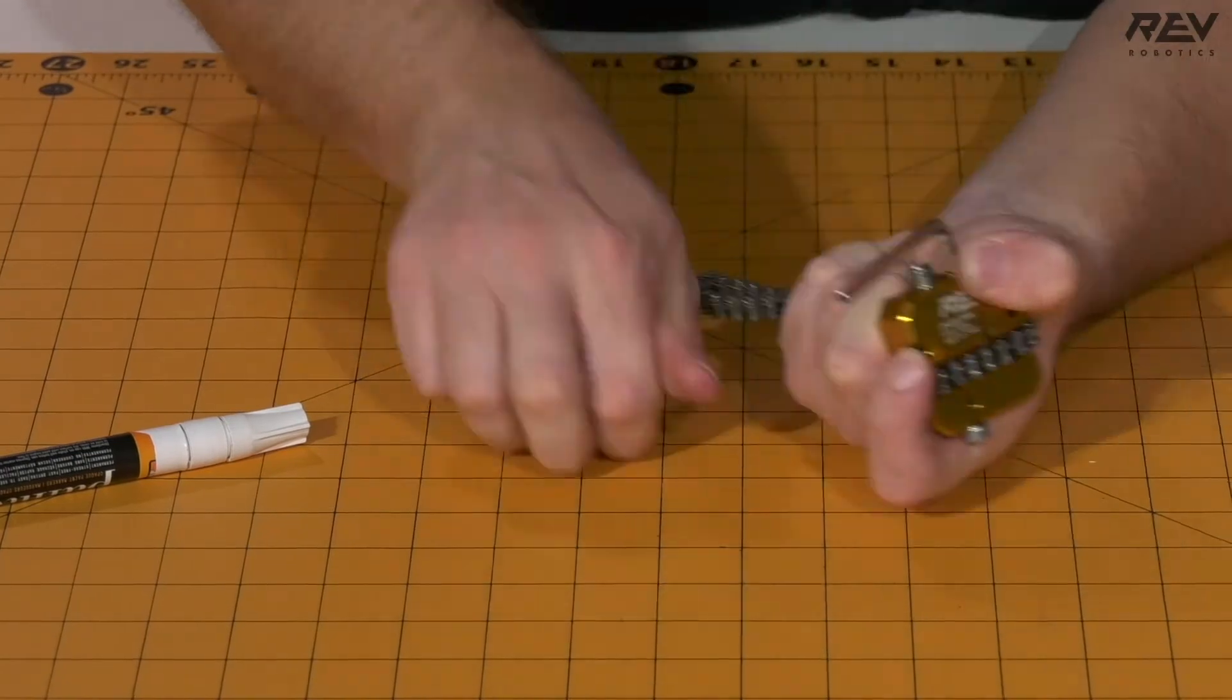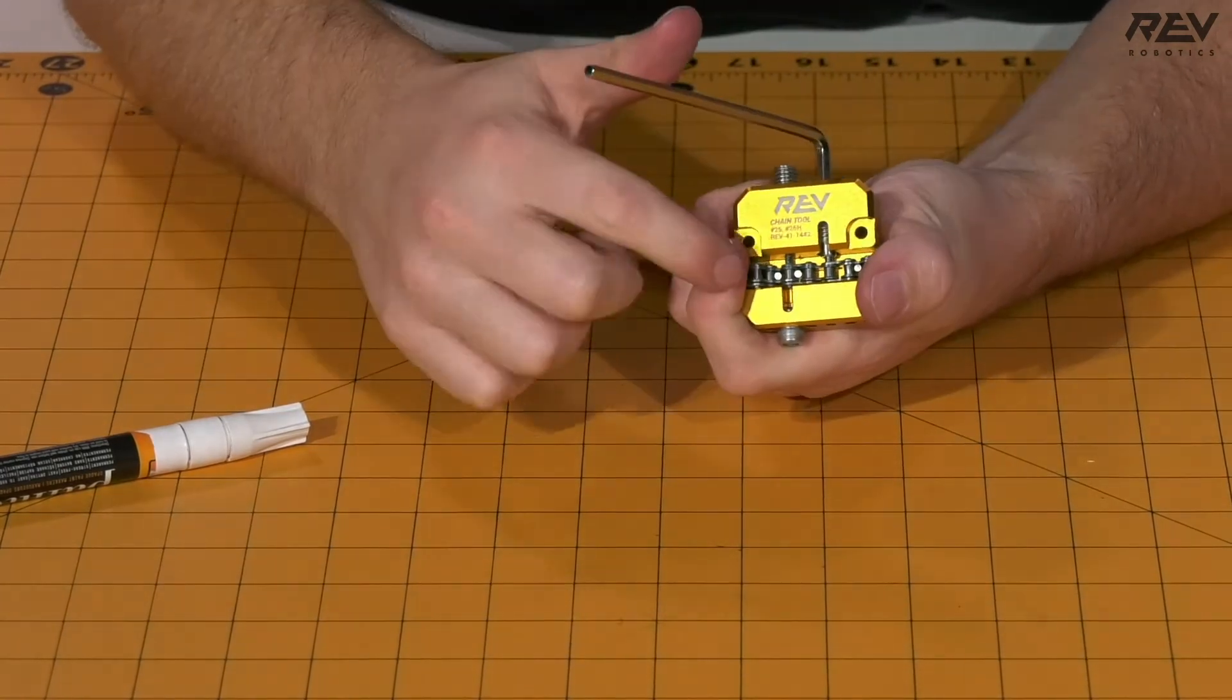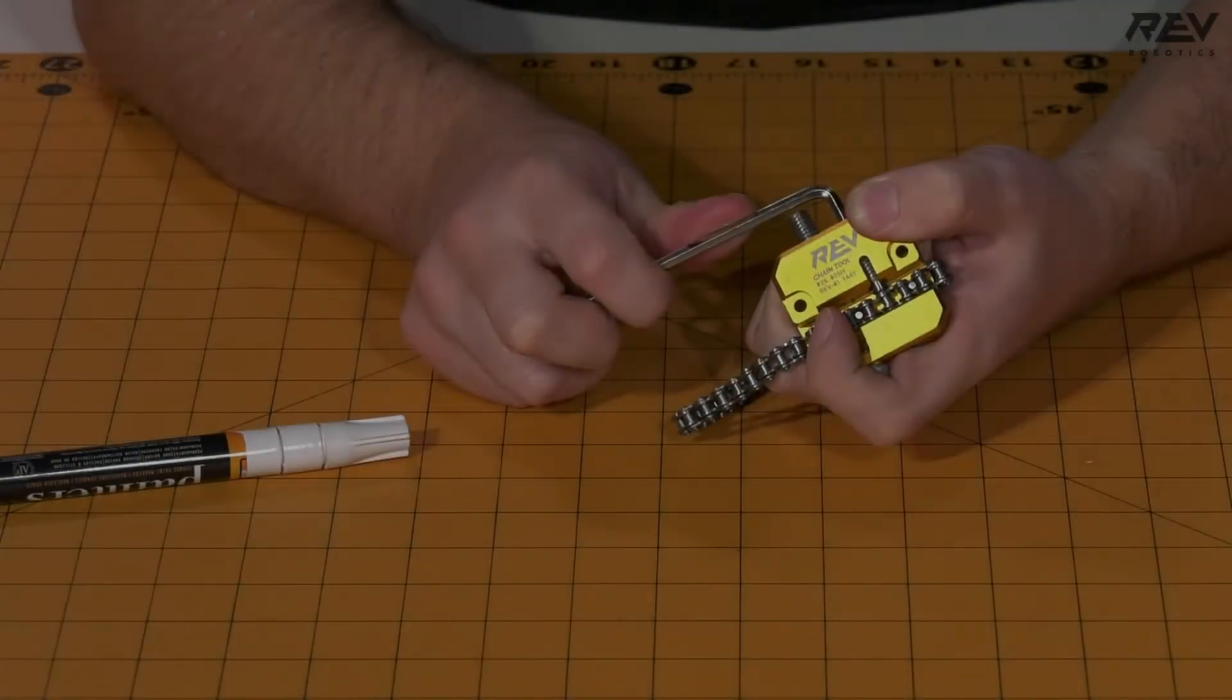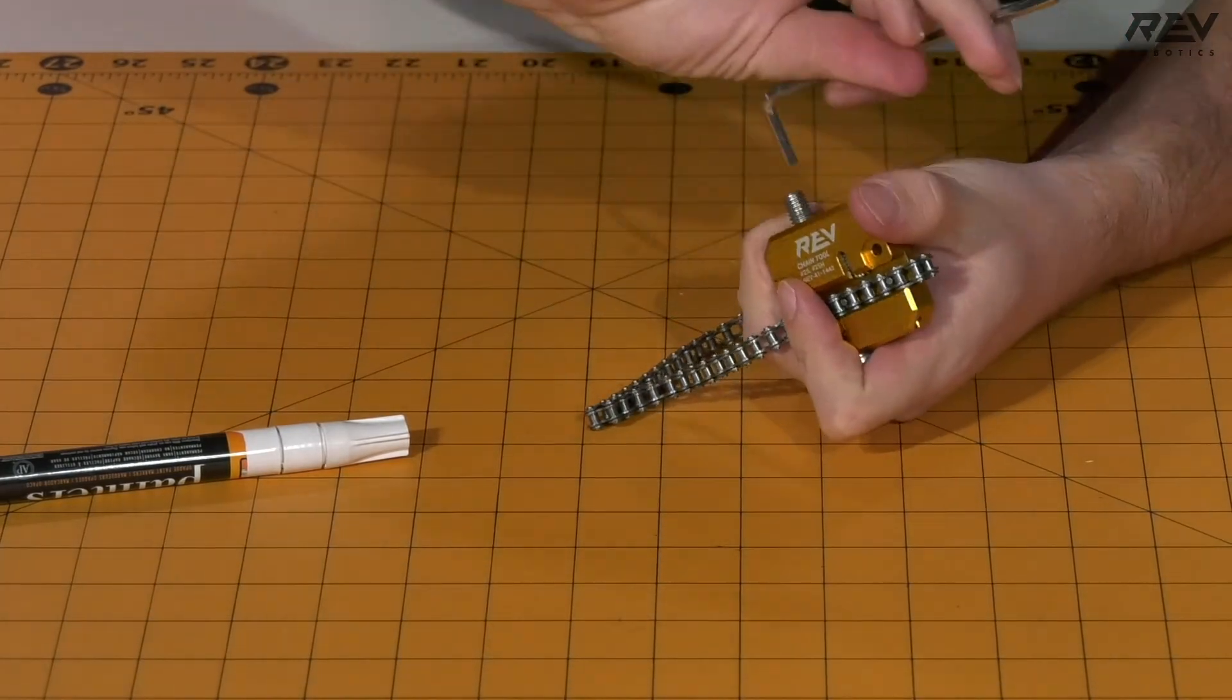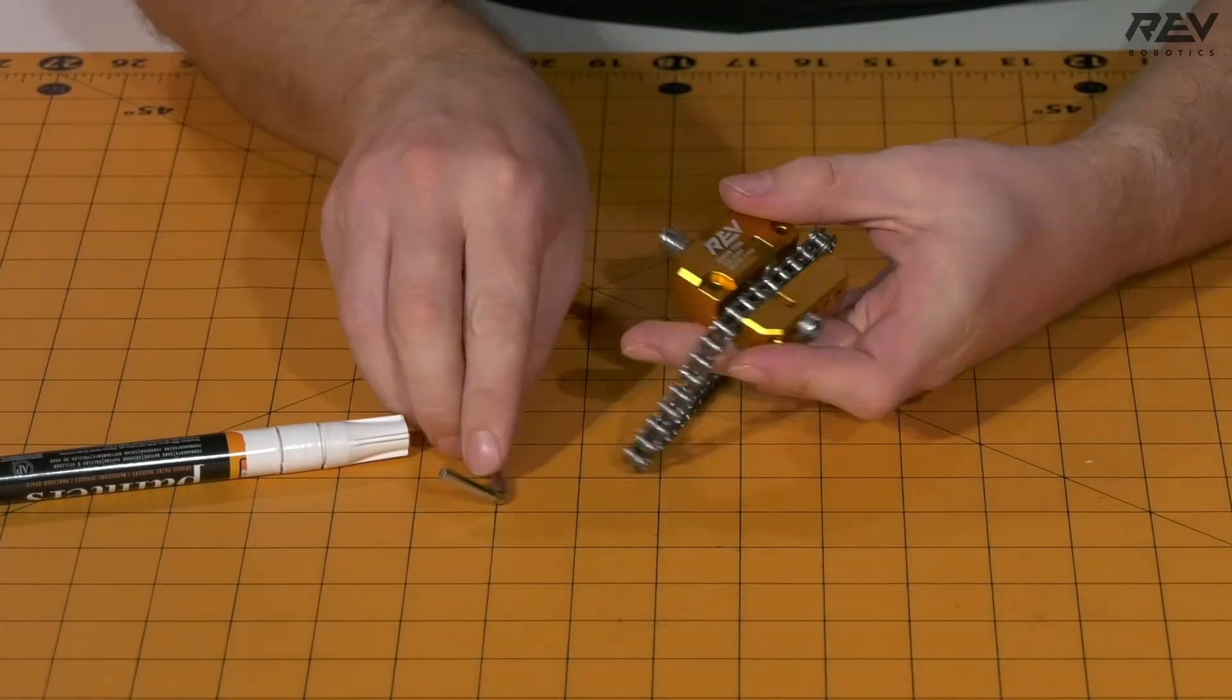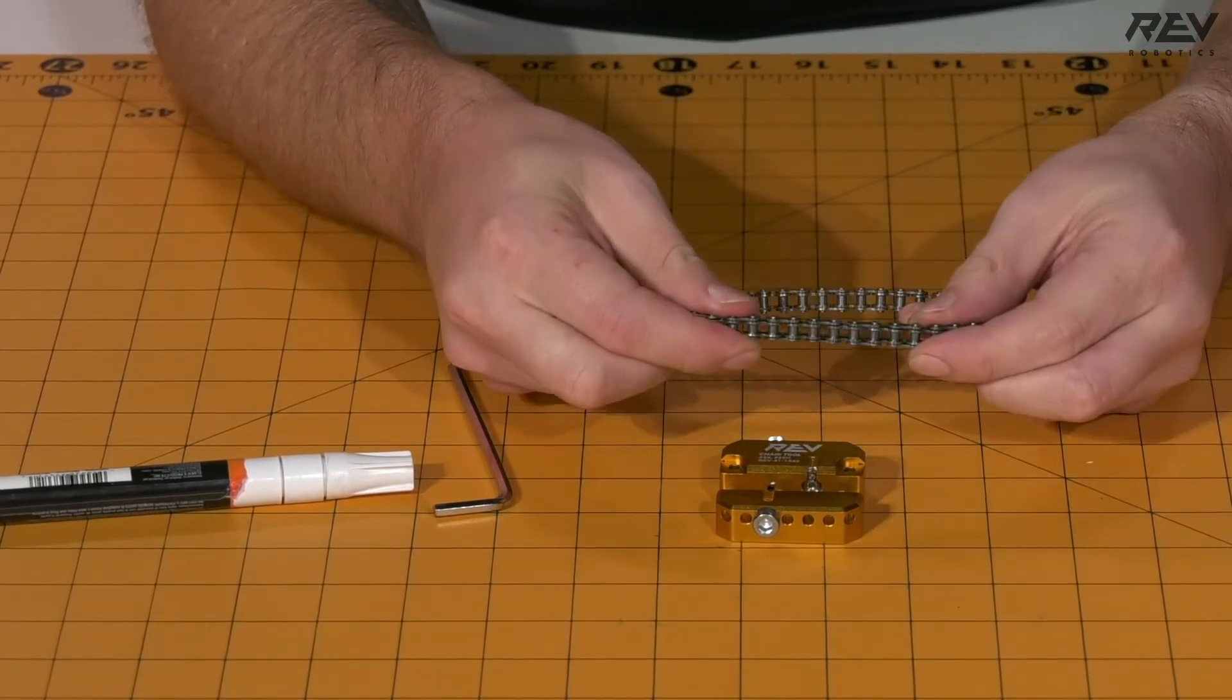Unlike pushing the pin out, pushing the pin in, you don't need to be nearly as careful or worried because it's going to bottom out against the bottom of the tool here. You can just keep cranking on this until it feels really tight. Now that the pin is completely reseated, we can unscrew this from the chain tool, remove it out, and double check to make sure that the pin has been completely seated, doing a little bit of a visual inspection.